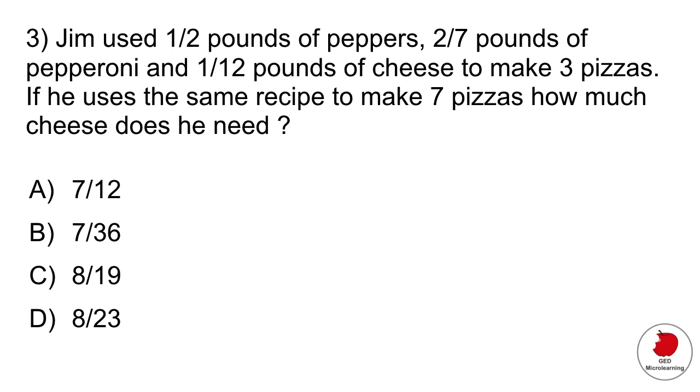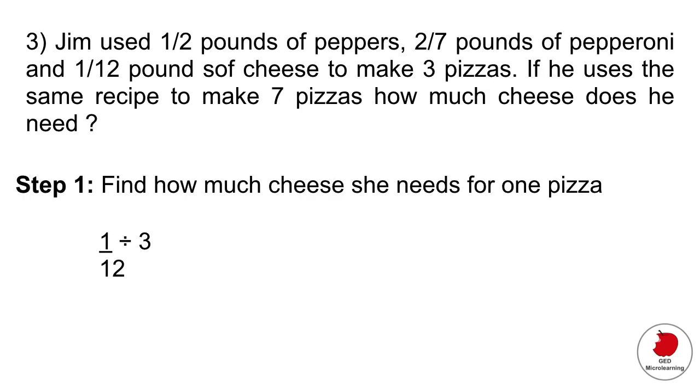Question three involves fractions. It says Jim used half a pound of peppers, two-sevenths pounds of pepperoni, and one and a twelfth pounds of cheese to make three pizzas. If he uses the same recipe to make seven pizzas, how much cheese does he need? What you have to do is first find out how many he needs for one pizza. We take that amount, one-twelfth pound of cheese divided by three. When you divide by a fraction it's the same as multiplying by the reciprocal, which means you flip that three around like that and that gives you 1/36 per pizza.